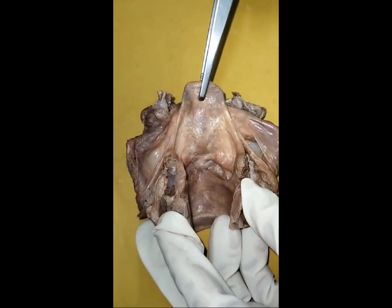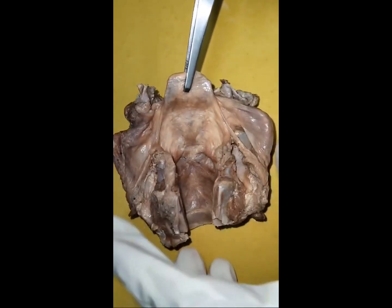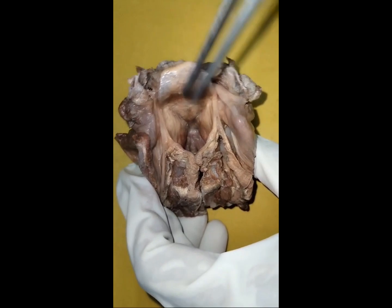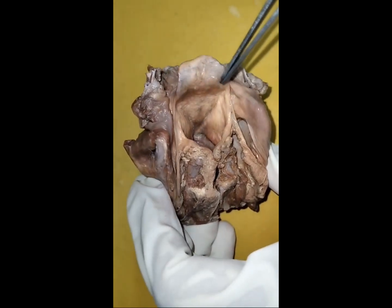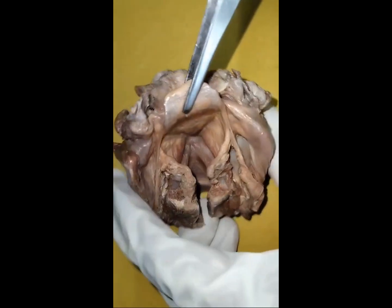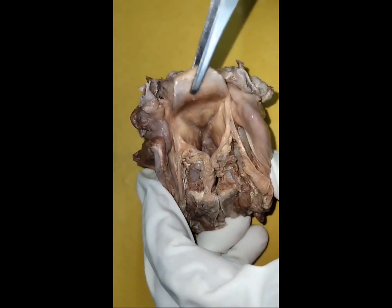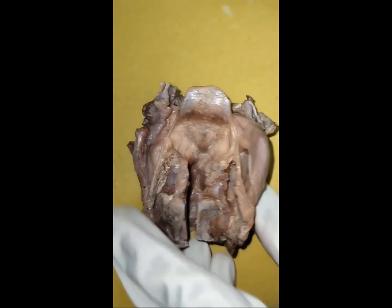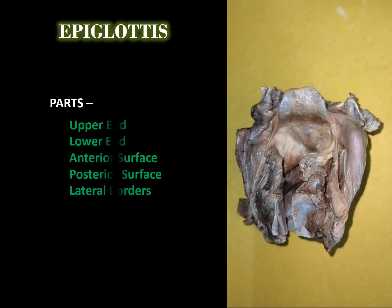Here is the posterior surface, which is smooth and lined by mucous membrane. It has two lateral borders which are connected to the arytenoid cartilages through aryepiglottic folds — mucosal folds having aryepiglottic muscles underneath. So the parts of epiglottis are: two ends (upper and lower), two surfaces (anterior and posterior), and two lateral borders.